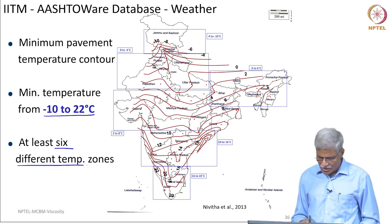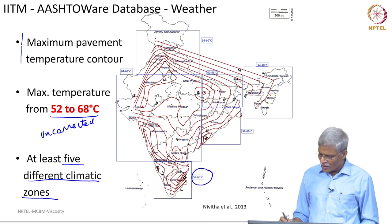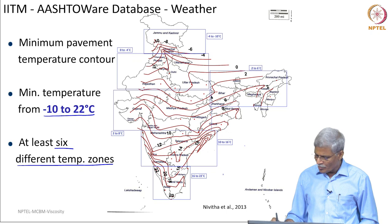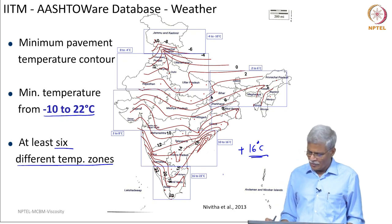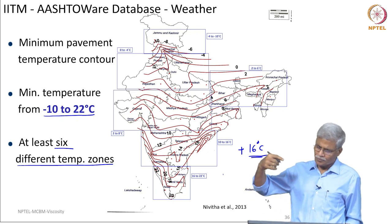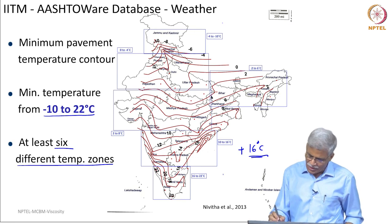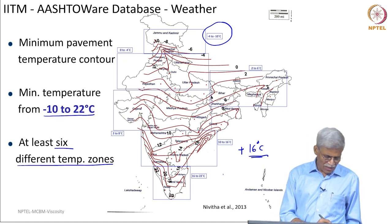When we look at the minimum pavement temperature, it goes from minus 10 to 22 degree centigrade, and there are at least six temperature zones. To give an example for Chennai, the maximum pavement temperature is 60 degree centigrade and the minimum pavement temperature is plus 16 degree centigrade. So if you are designing a pavement in Chennai, you should pick a grade of bitumen that gives the required rut resistance at 60 degree centigrade as well as fatigue resistance at plus 16 degree centigrade. Substantial low temperatures are seen near Jammu and Kashmir, where it can go up to minus 10 degree centigrade — and again, this is uncorrected for traffic.